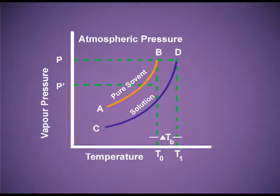Let me explain through a graph. The graph is between temperature along the x-axis and vapour pressure along the y-axis. You can see two curves: one curve A-B is for the pure solvent, and another curve C-D is for the solution. From the figure you can see that the C-D curve is below A-B, showing that at each temperature the vapour pressure of the solution is less than the vapour pressure of the pure solvent. From the graph, T_b is the boiling point of pure water because at T_b the vapour pressure equals atmospheric pressure — see point B — and at this temperature the pure solvent will boil.